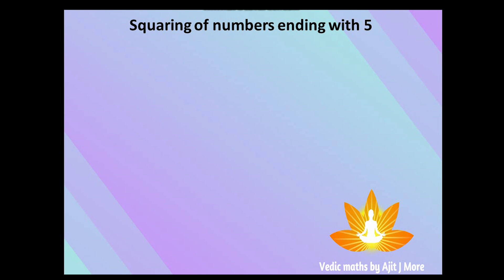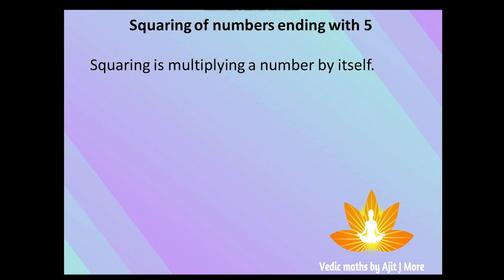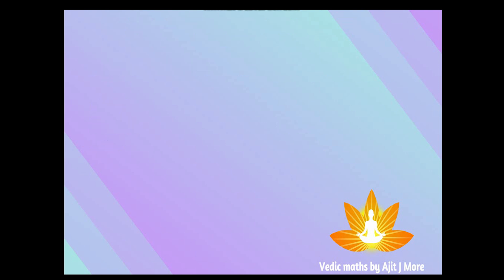Squaring a number means multiplying a number with itself. For example: 5×5=25, 6×6=36, 7×7=49 — those are the squares of 5, 6, and 7 respectively.